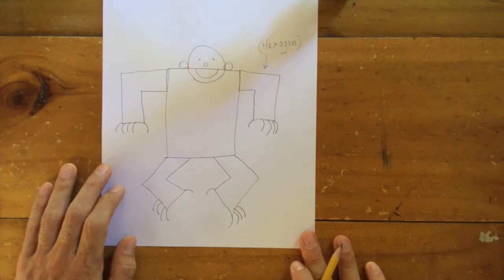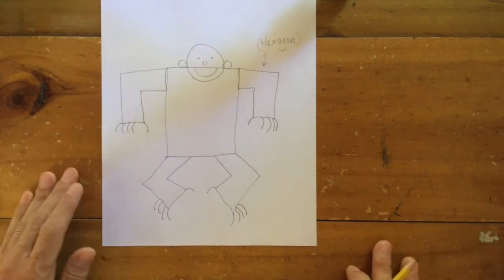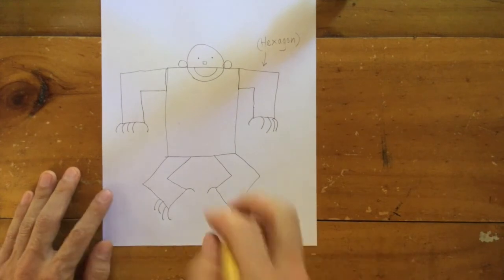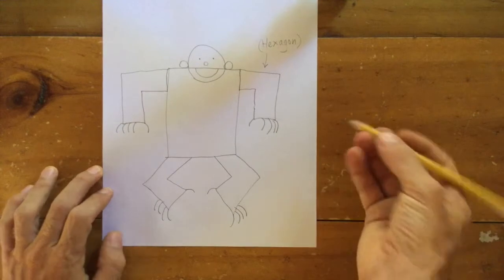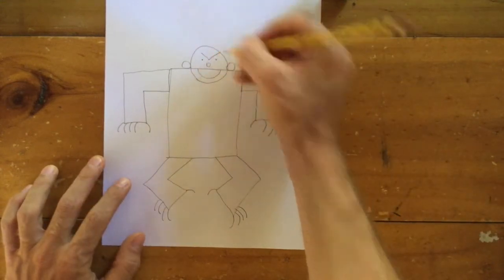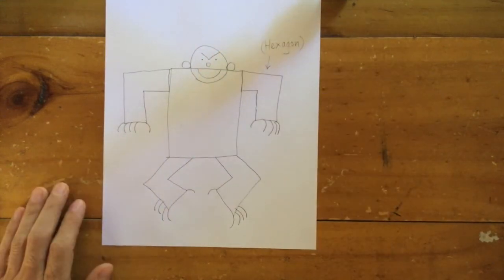There we have it. A gorilla. Or a chimpanzee. Something like that. Maybe a bear. I'm not really sure what this one is. You can keep it a happy bear or a happy chimp. Or just like the octopus, you can make it into a mean chimp. Just like that. With a pencil.